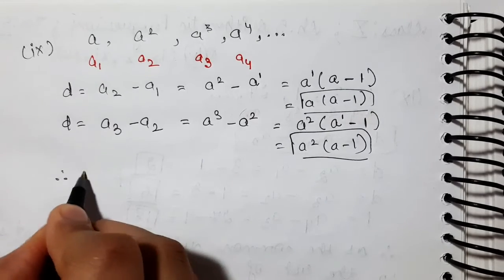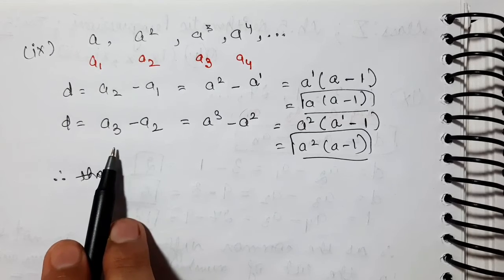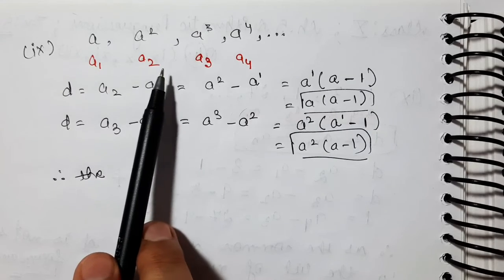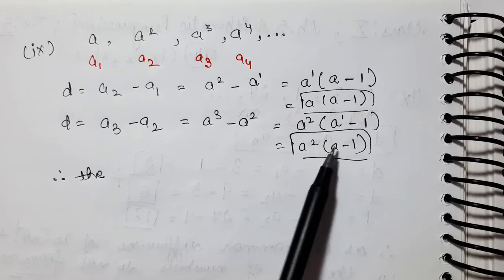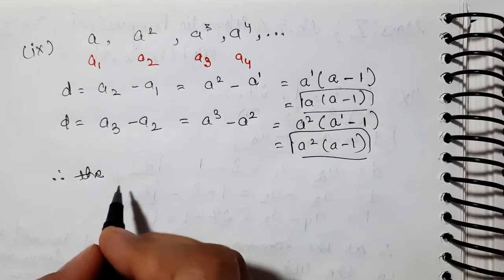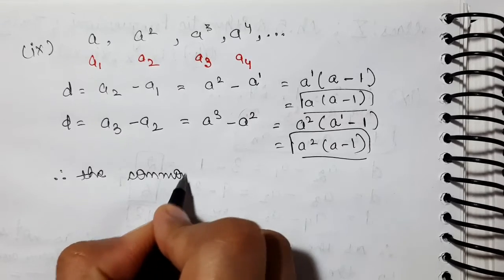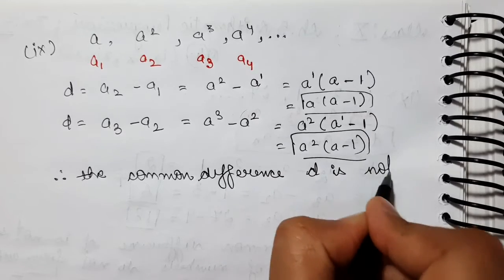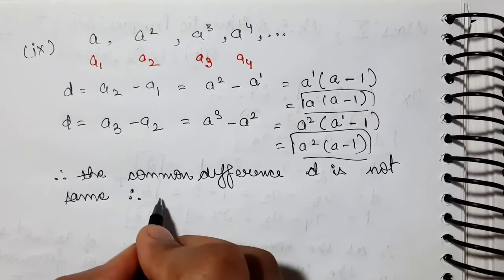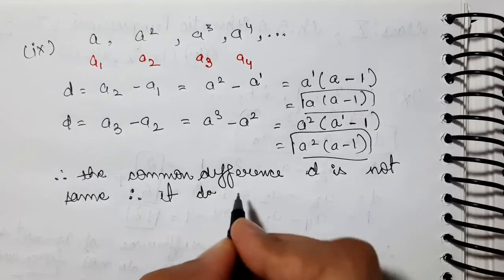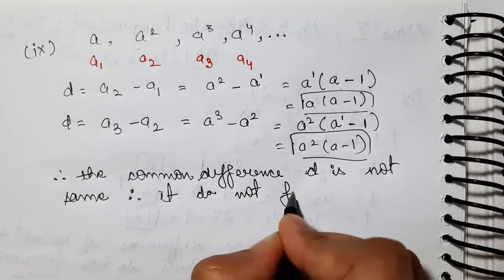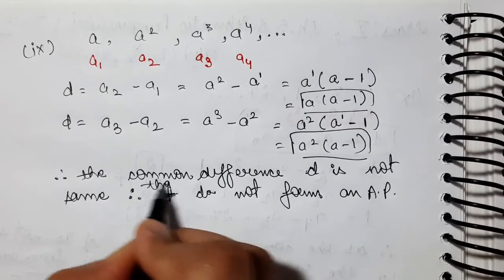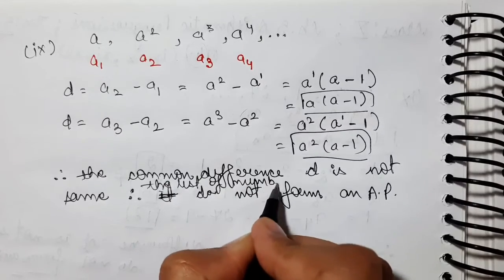So this is not an AP. Even without checking A4 minus A3, we can already see from the first two differences that they are not the same. Therefore, the common difference D is not the same, and the list of numbers does not form an AP.